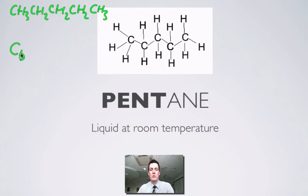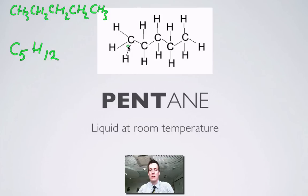Or we could write the whole formula as C₅H₂×₅₊₂, which is 12, so C₅H₁₂. It's drawn here showing all the bonds. The bond angles look different in this drawing but it means exactly the same thing, because the longest chain of continuous carbon atoms is five. We'll see later when we look at isomers that that longest chain is really important.